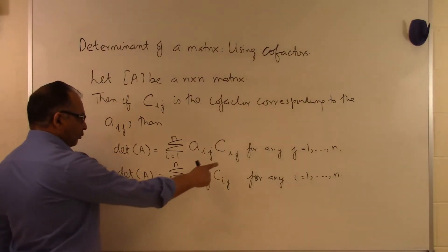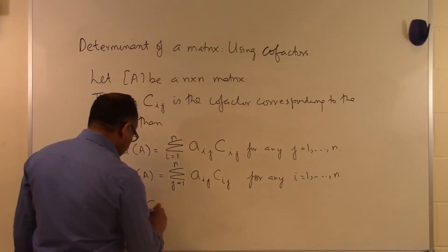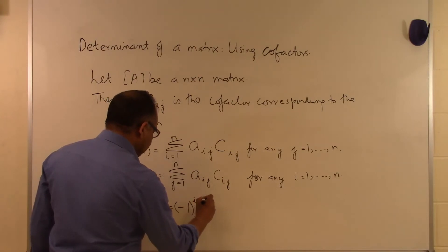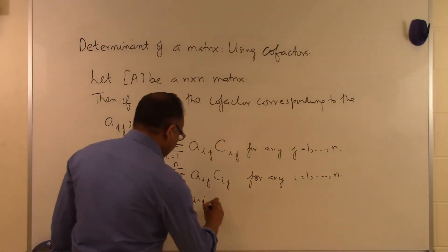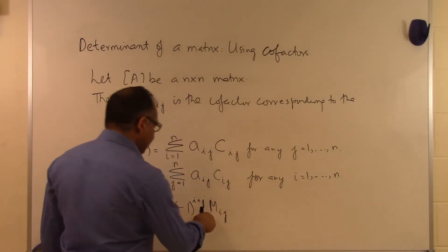So the big question is, what is Cij? Cij is the cofactor and that's nothing but minus 1 raised to i plus j times Mij, where Mij is the minor.